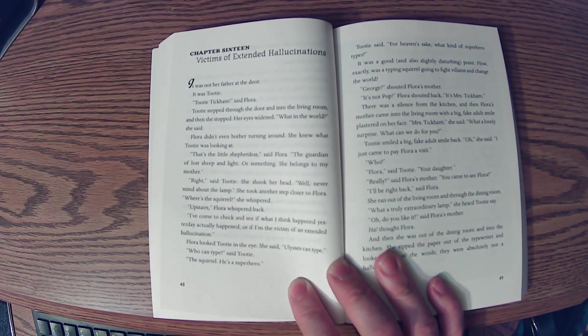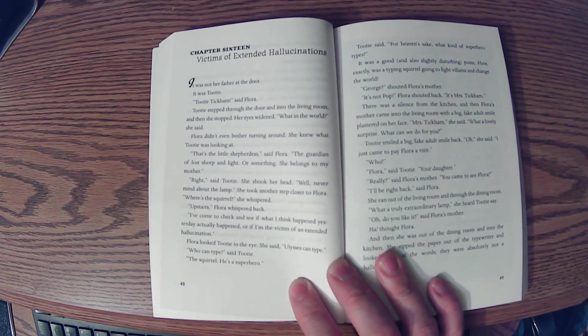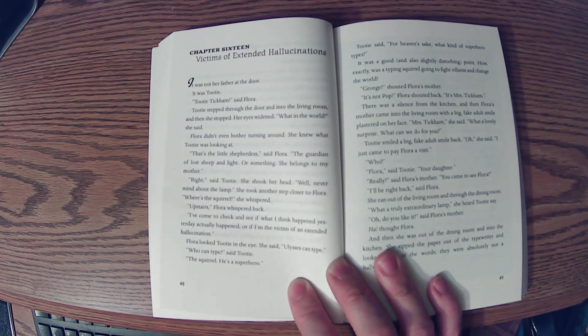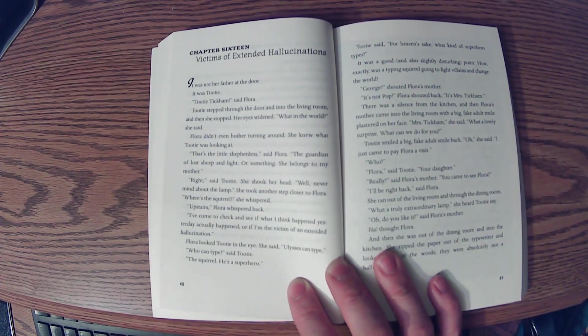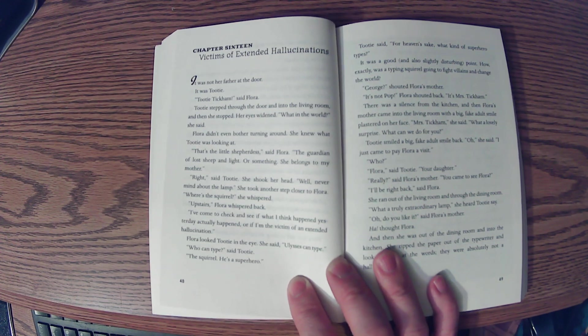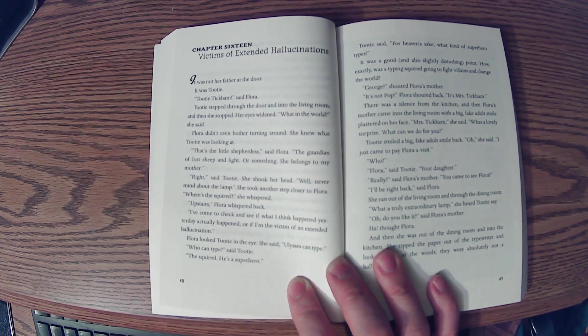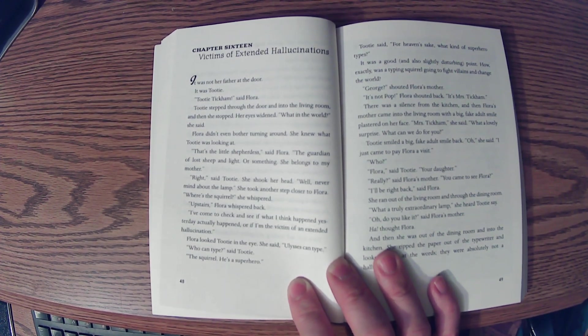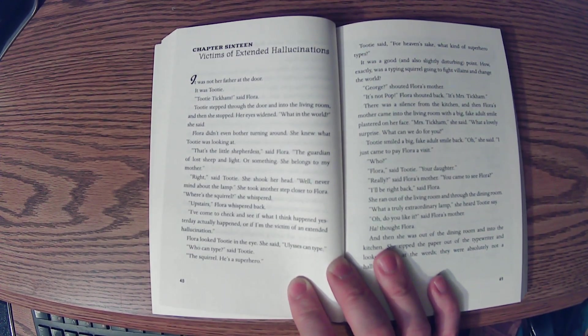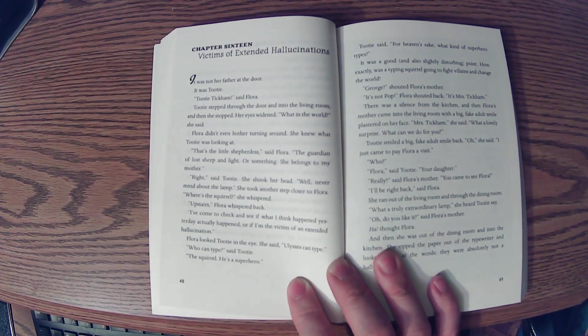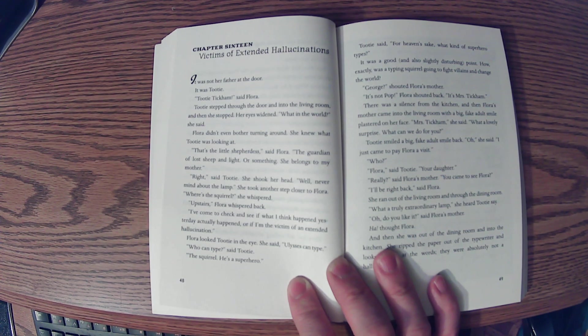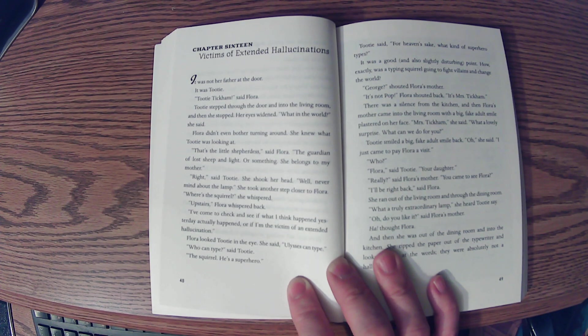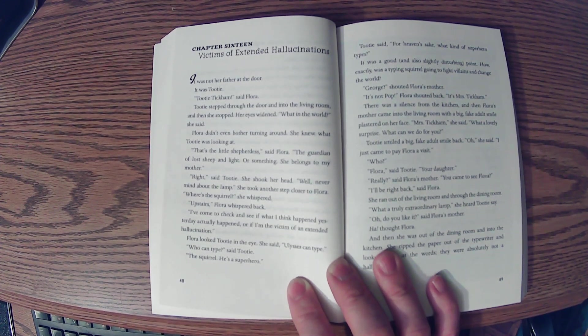George, shouted Flora's mother. It's not Pop, Flora shouted back. It's Mrs. Tickham. There was a silence from the kitchen, and then Flora's mother came into the living room with a big fake adult smile plastered on her face. Mrs. Tickham, she said. What a lovely surprise. What can we do for you? Tootie smiled a big fake adult smile back. Oh, she said, I just came to pay Flora a visit. Who? Flora, said Tootie. Your daughter. Really? said Flora's mother. You came to see Flora?